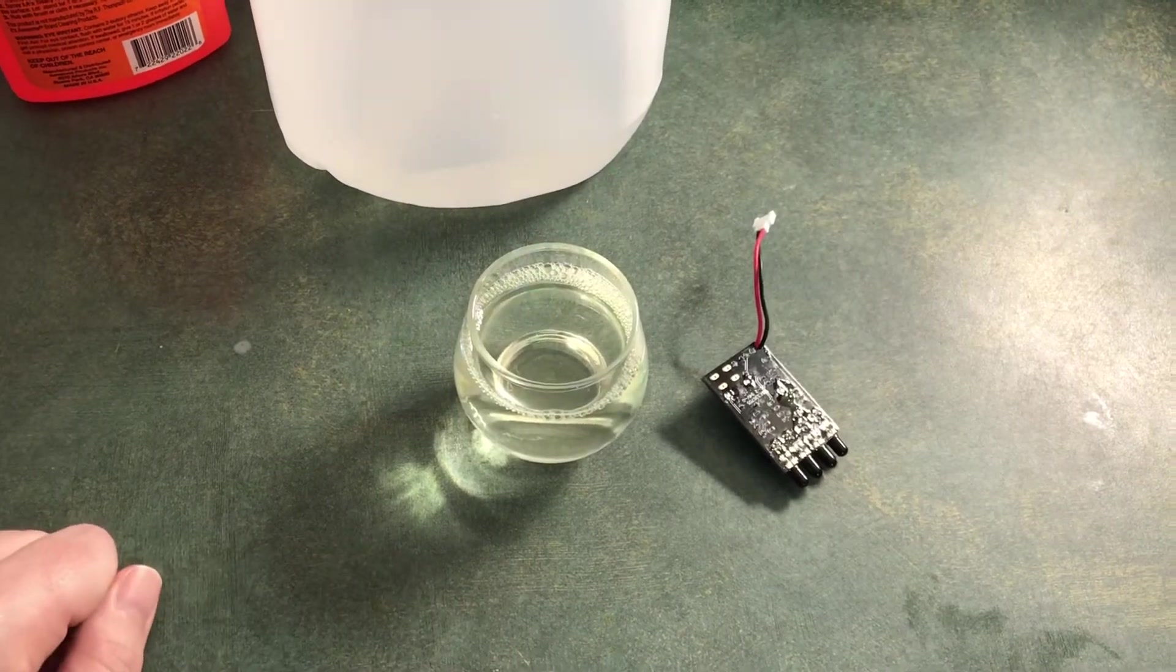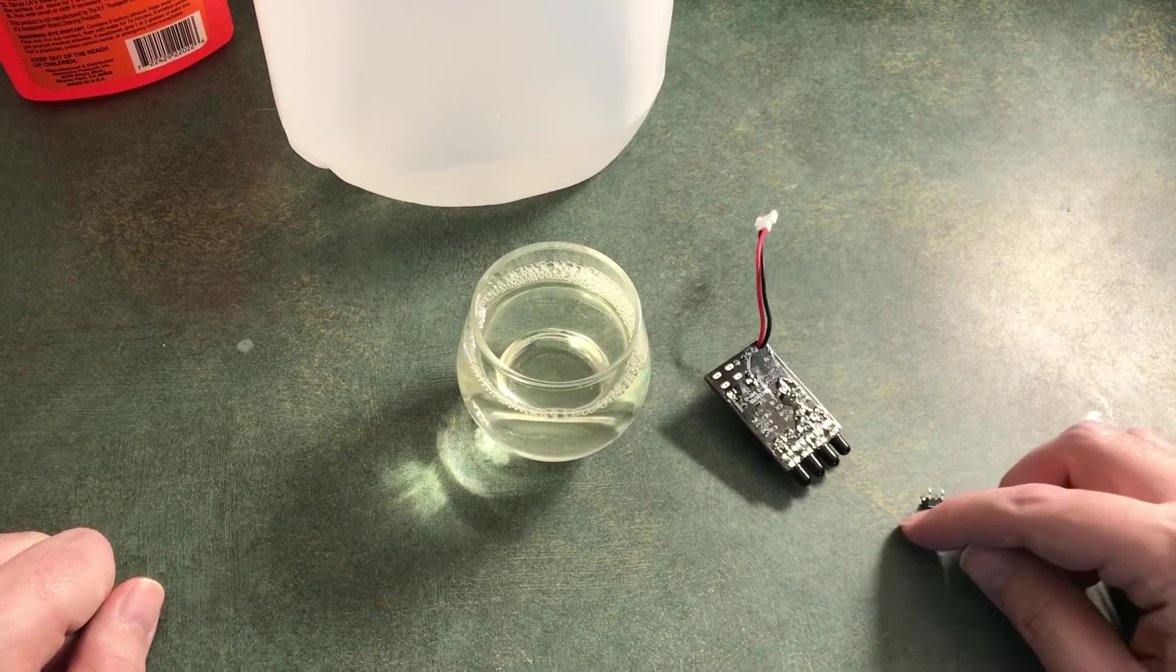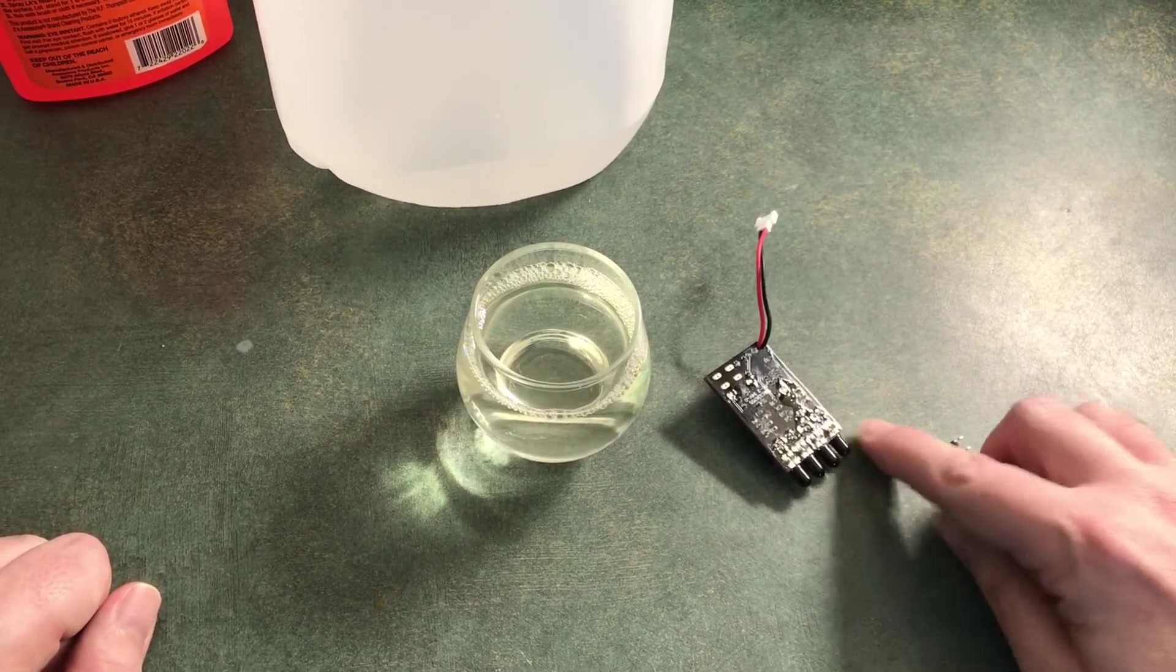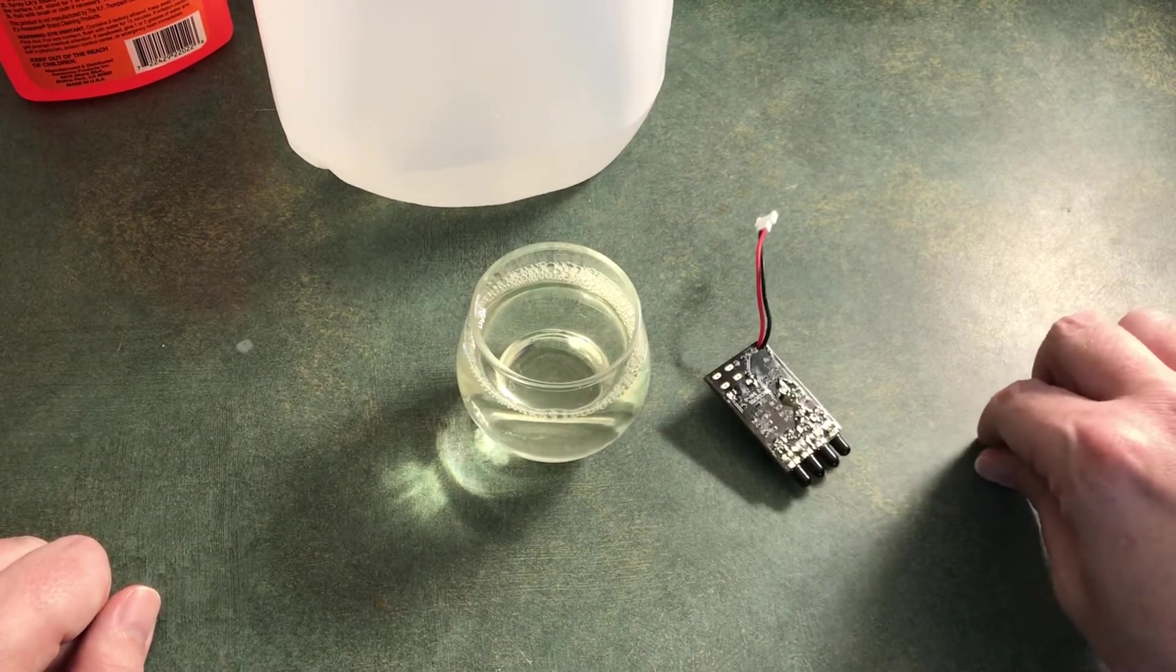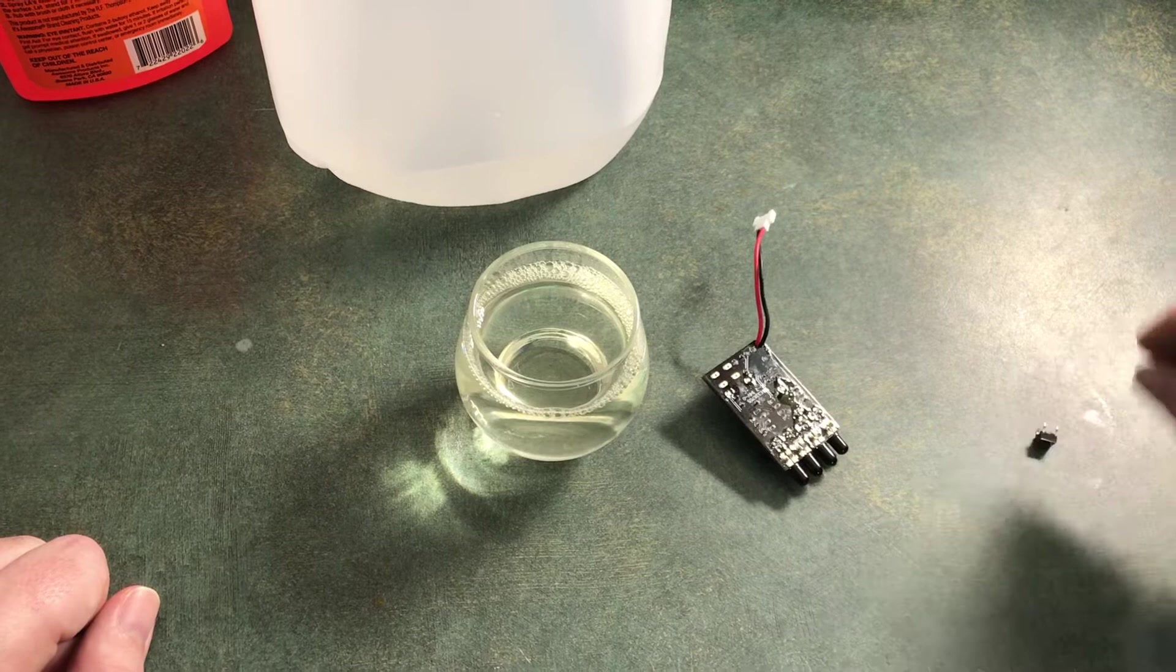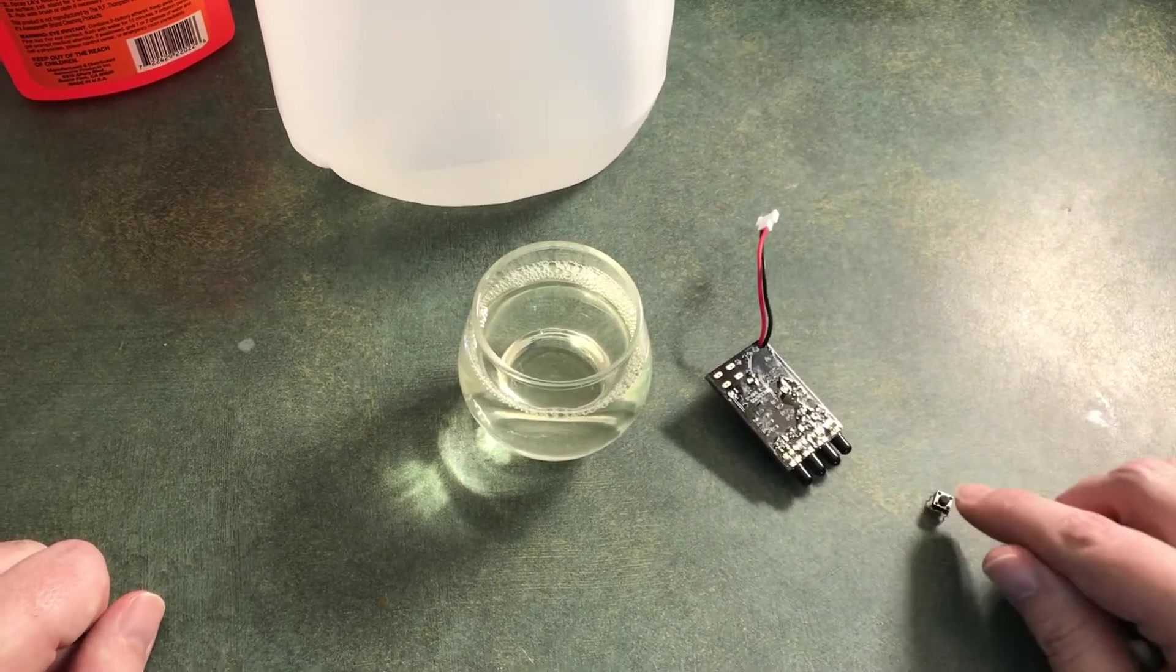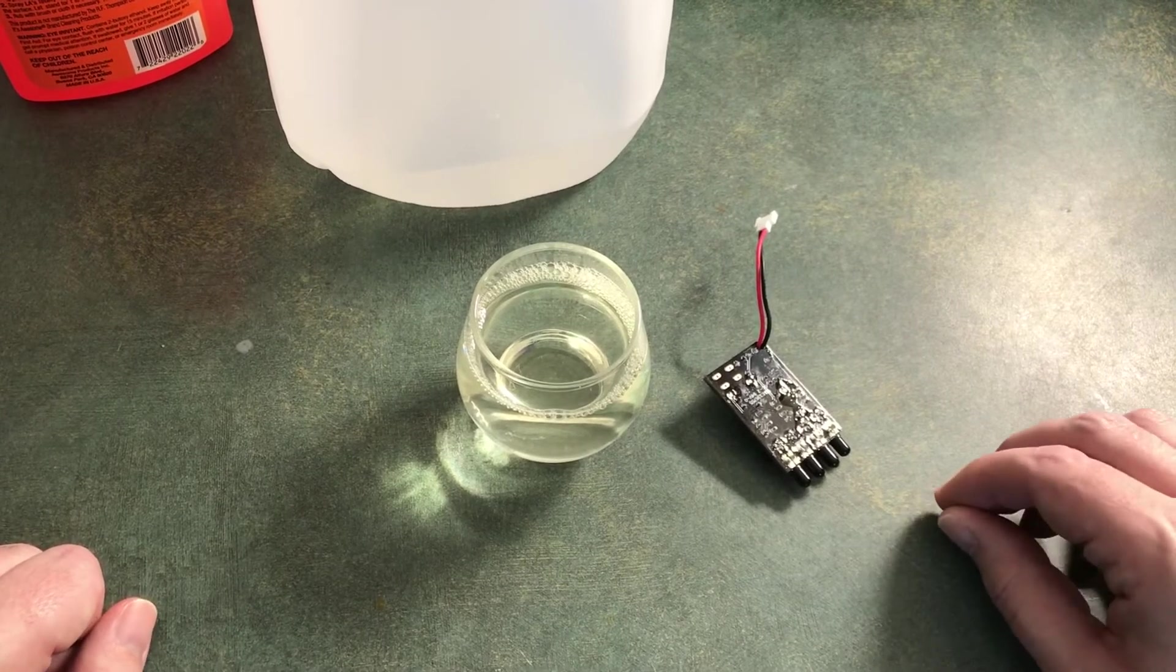But like this type of switch, the most common, these ones here are not sealed. You don't want those on the board. What you have to do is clean your board first and then just use a tiny little bit of no clean flux when you solder that in and then do that last. Okay.